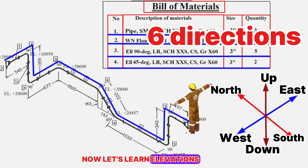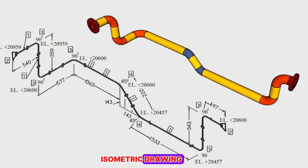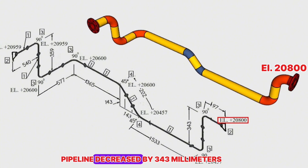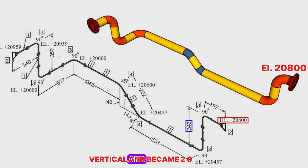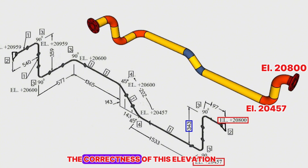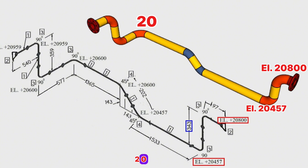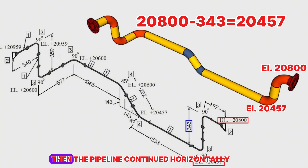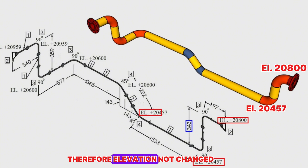Now let's learn elevations as shown in the piping isometric drawing. The elevation of the starting point of the pipeline is 20,800 millimeters. The level of the pipeline decreased by 343 millimeters vertically and became 20,457 millimeters. We can easily check the correctness: 20,800 minus 343 equals 20,457 millimeters. The pipeline then continued horizontally, so the elevation did not change.